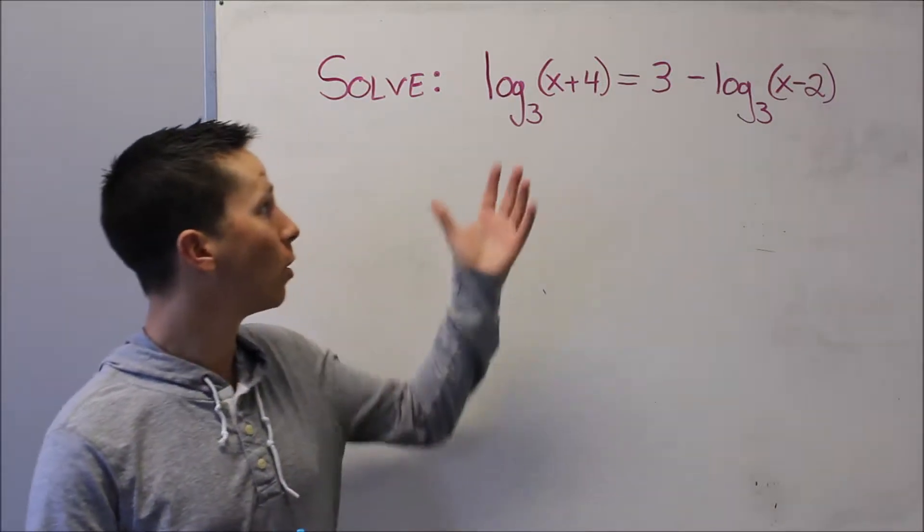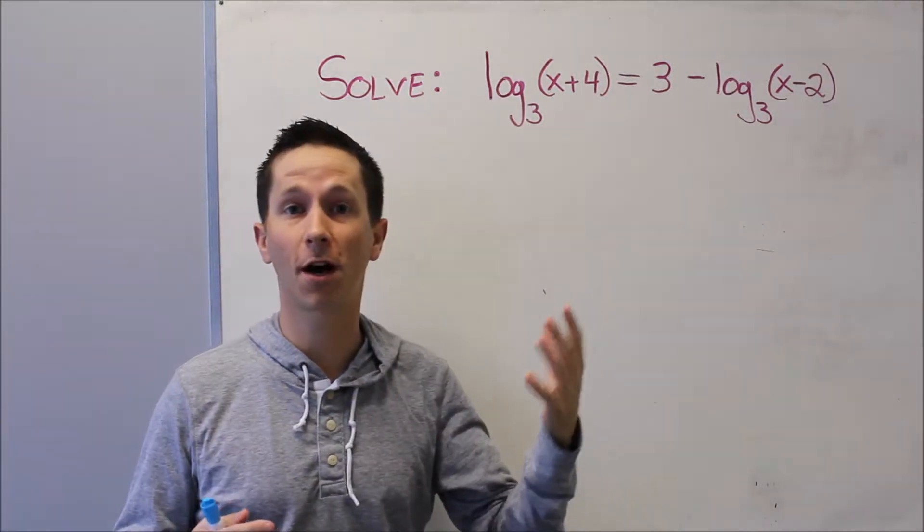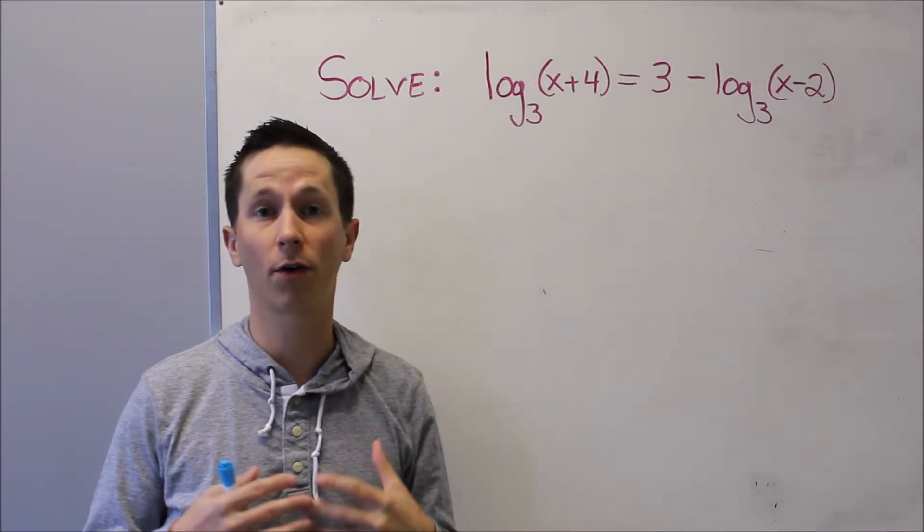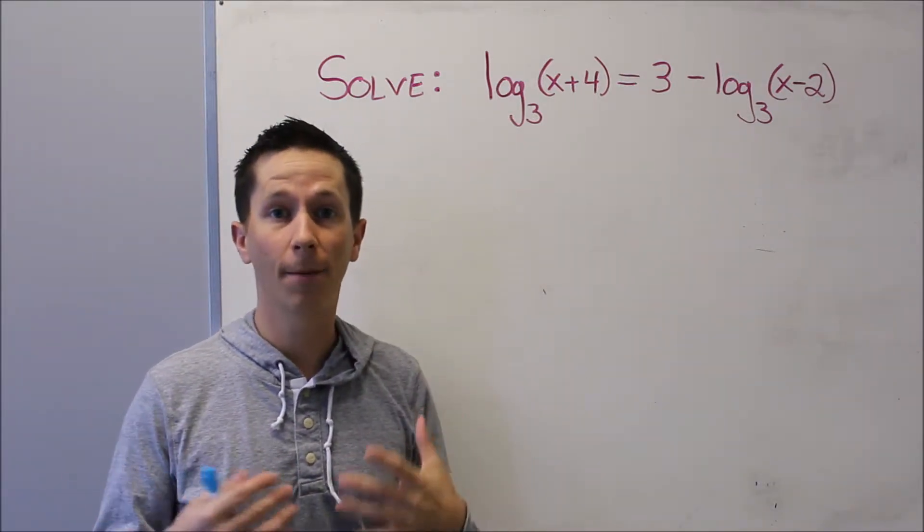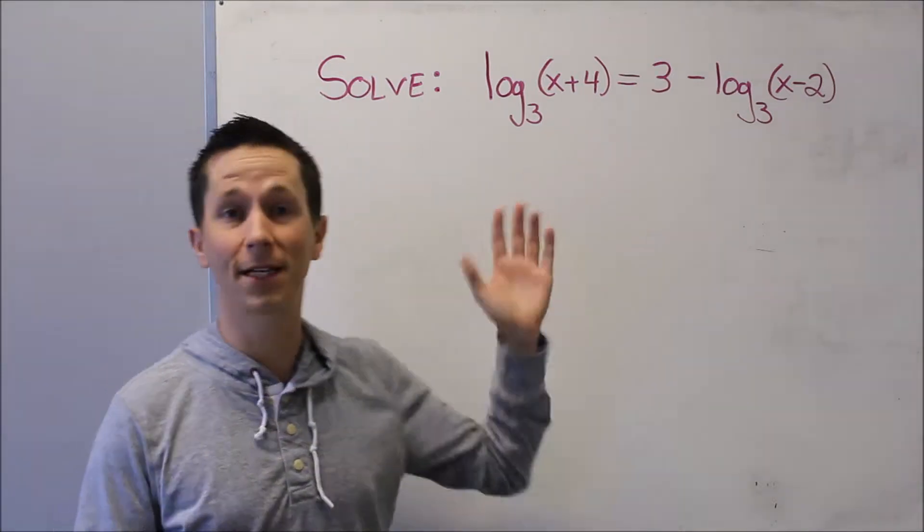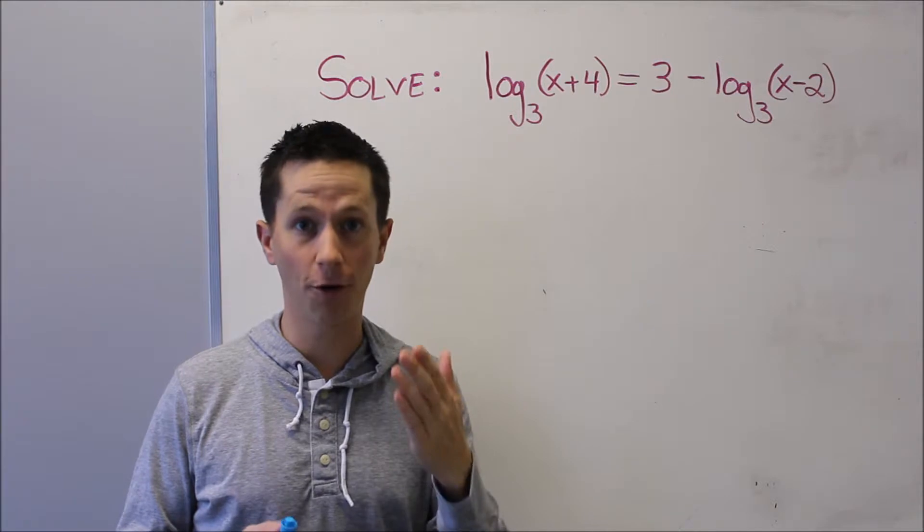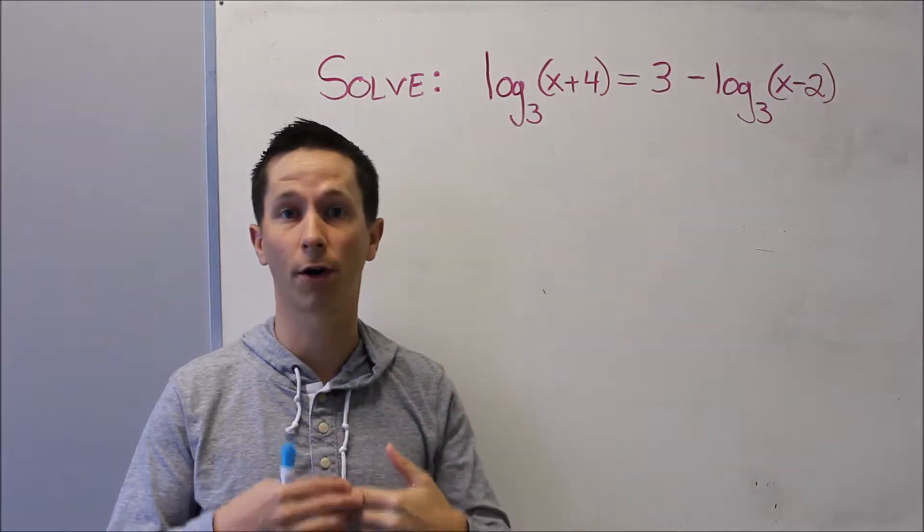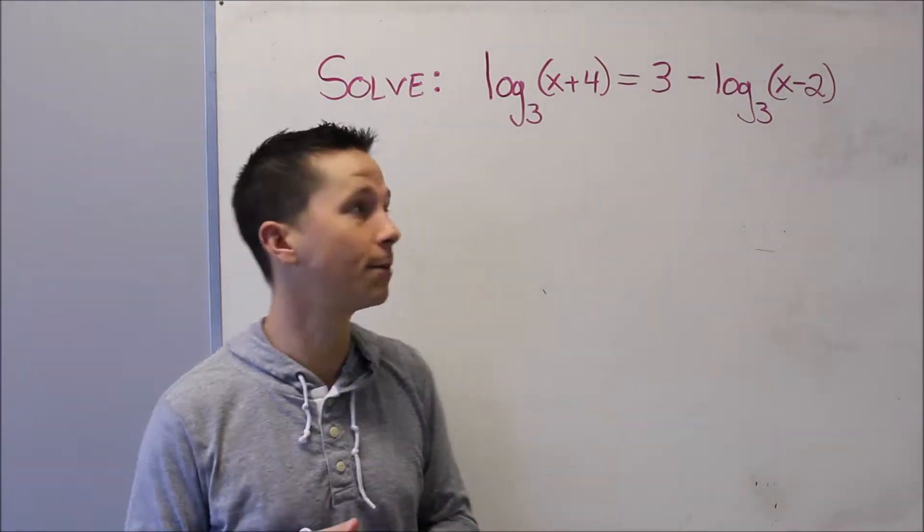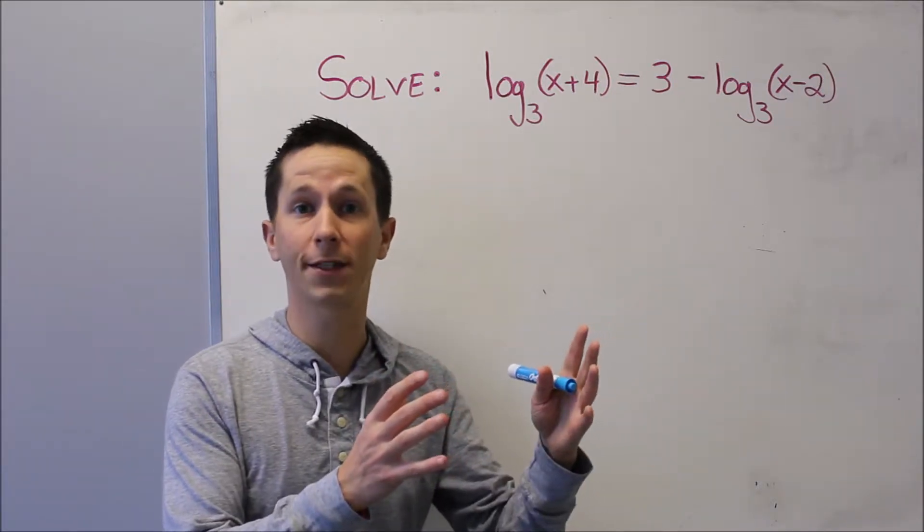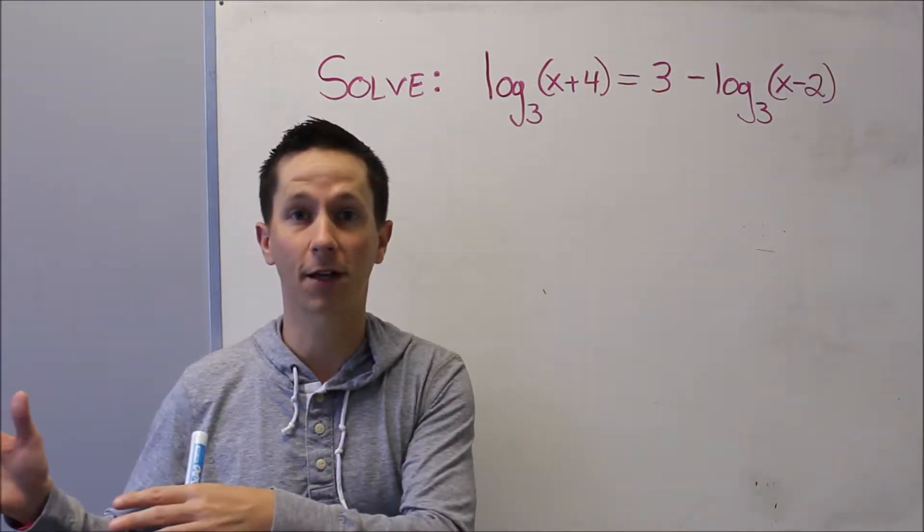These are equations where we've got multiple logarithms, and we've got an equal sign, so we know we're going to have to isolate x somehow. But usually x is trapped inside the logarithms, like it is in this question, so we're going to follow a few basic steps that work pretty much every time. The first step is to gather all of your logarithms on one side of the equation and everything else on the other side.